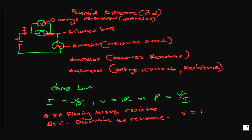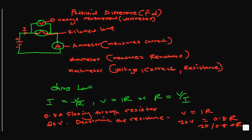We know V = IR, so 20 volts equals 0.8 times R. We can divide 20 by 0.8, which gives us 25 ohms.